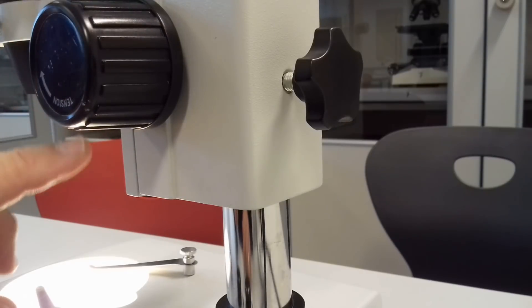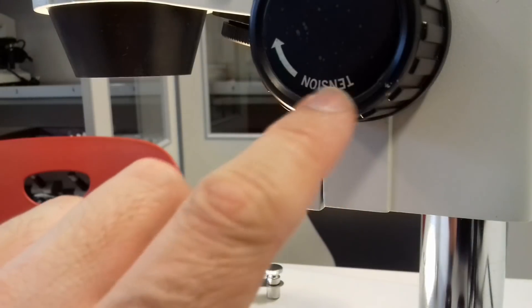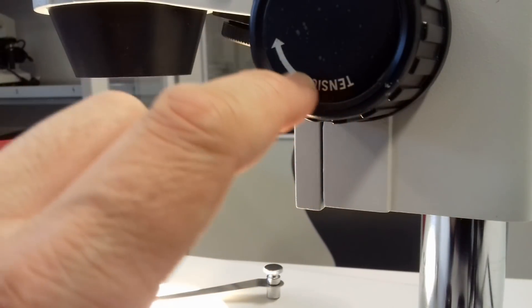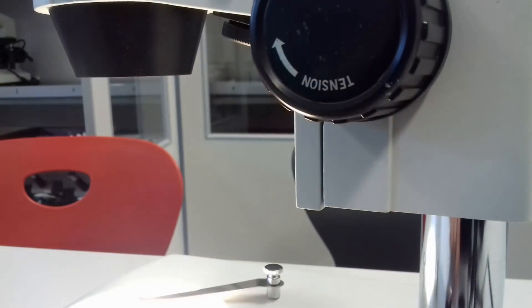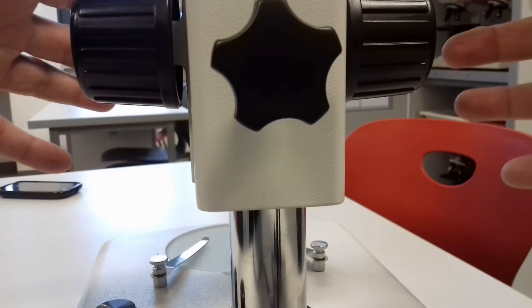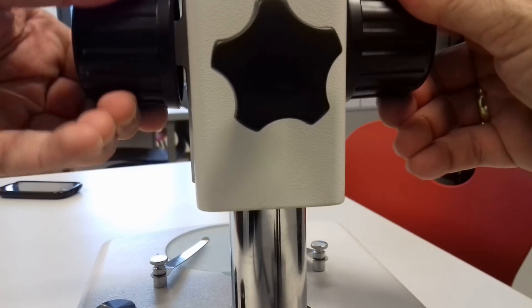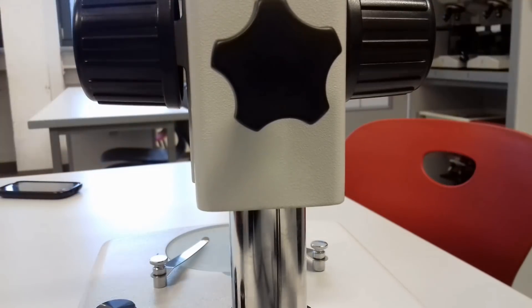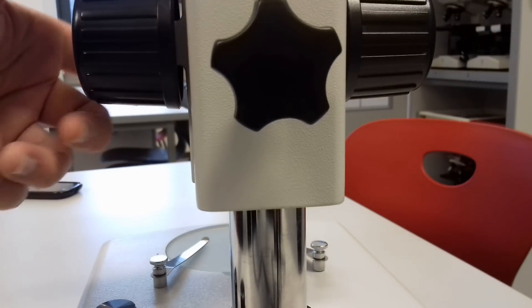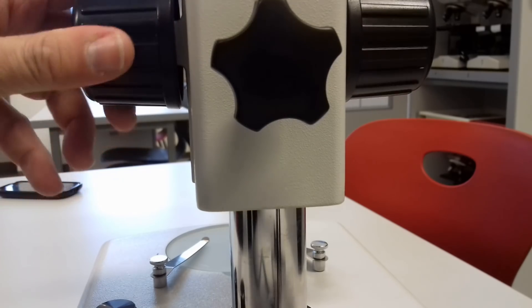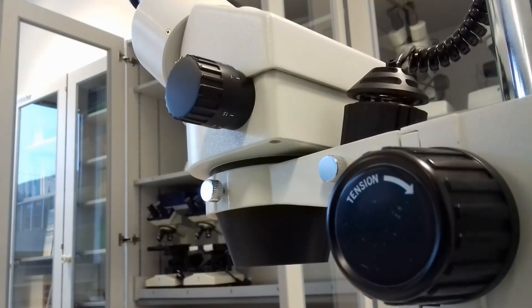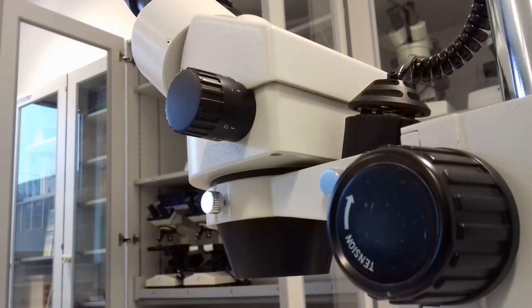And what you also can see is that on the knob there is the word tension written on here. What does this mean? You can turn the two knobs against each other and this allows you to tighten the focus. So right now it's tightened and you can focus easily. But if it is too loose, then there is a drift, a focus drift, and you can see that the whole head moves down on its own weight.